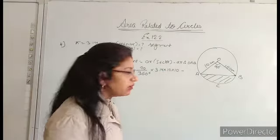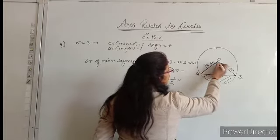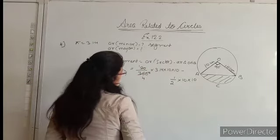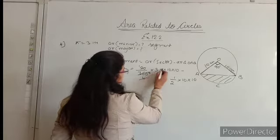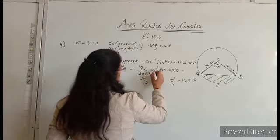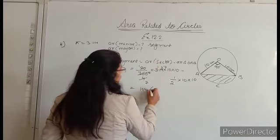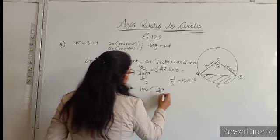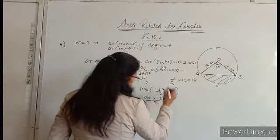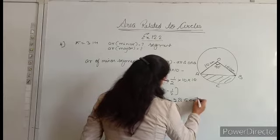Minus area of triangle OAB. Now this is a right angle triangle, so we have to find half into base into height. Solving this: 90 upon 360 is one-fourth, so we get 1.57 upon 2 minus 1 upon 2. We'll take 100 common — 100 into 0.57 divided by 2. The final answer you will get is 28.5 cm square.